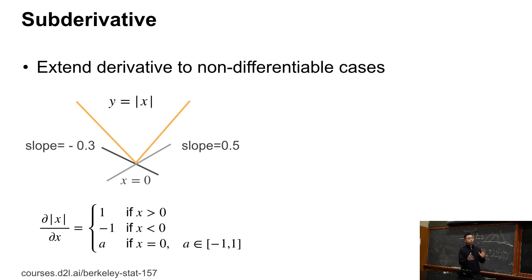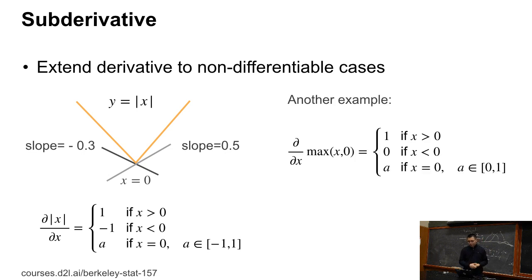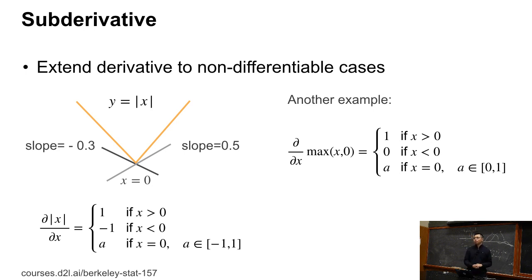In practice, we choose a particular value: either minus 1, 1, or 0. Another example is the max operator, also important for max pooling later. Given max(x, 0), the sub-derivative is 1 if x is greater than 0, 0 if x is less than 0, and at x equal to 0 we can choose any value between 0 and 1 — usually 1 or 0.